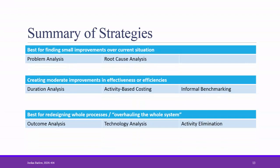Here is a summary of the strategies discussed in this video. Problem analysis and root cause analysis are best for finding small improvements over the current situation. Duration analysis, activity-based costing, and informal benchmarking are great for creating moderate improvements in effectiveness or efficiency. If the organization is looking to redesign or overhaul the whole process or system, it might be best to consider outcome analysis, technology analysis, or activity elimination as a strategy. Again, the strategy you choose will shape the techniques you use to gather requirements and refine them for your requirements definition document.